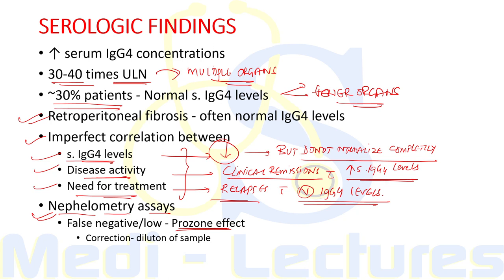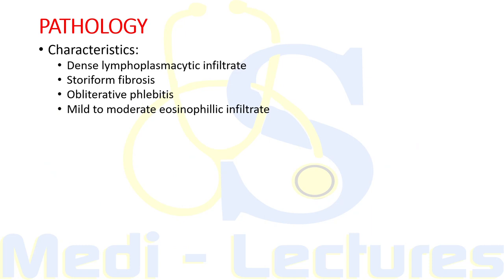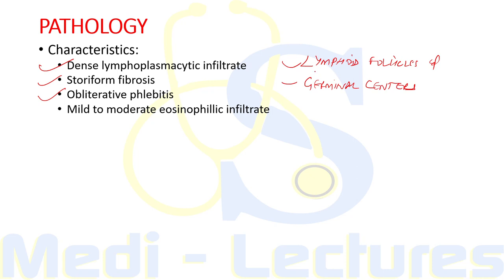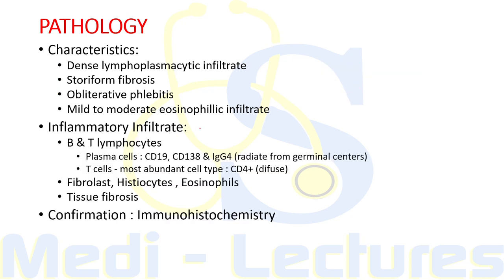The key histopathological characteristics seen in the biopsy specimen include a dense lymphoplasmacytic infiltrate organized in a storiform pattern, obliterative phlebitis typically involving veins, and mild to moderate eosinophilic infiltrate. Lymphoid follicles and germinal centers are frequently observed. When the inflammatory infiltrate involves the glands, it aggregates around the ductal structures and can form masses leading to tissue destruction.